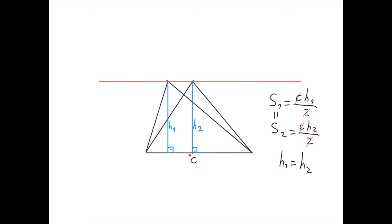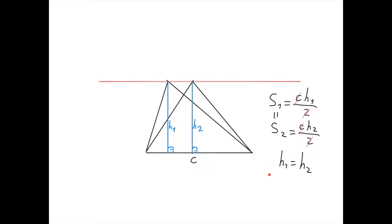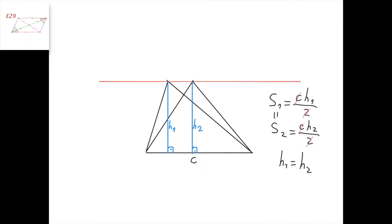Now consider this quadrilateral. We have two segments that are parallel — they're parallel because they're both perpendicular to this side — and they are equal. Therefore this is a parallelogram. But in a parallelogram, this angle equals this angle, so here and here we have 90 degrees. Therefore this side is parallel to this side, and the quadrilateral is actually a rectangle.